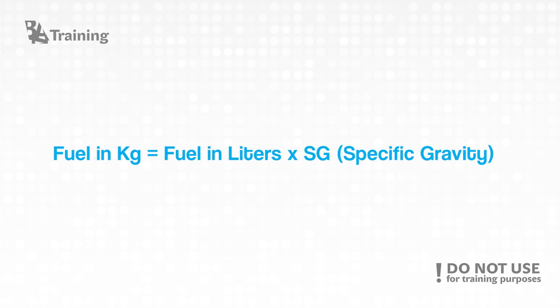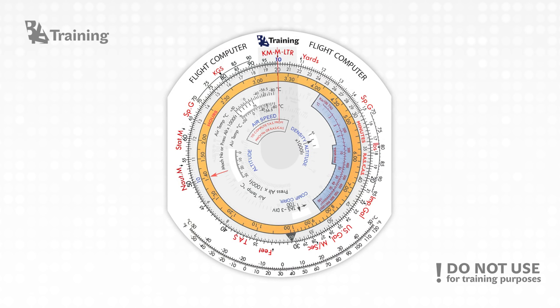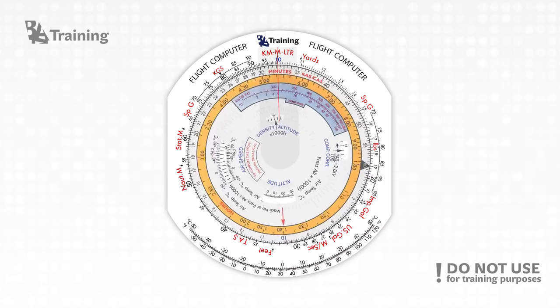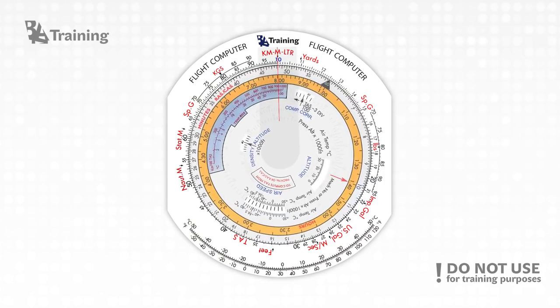Fuel in kilograms equals fuel in liters multiplied by specific gravity. In order to do this on CRP computer, we have to align the number of liters we want to convert to the liter arrow at the top of the CRP computer.